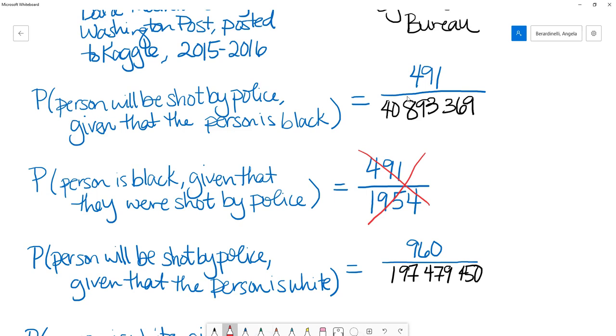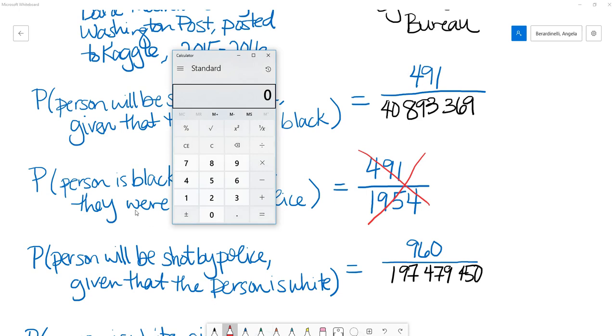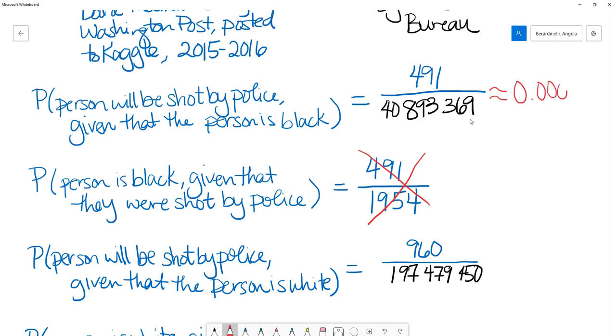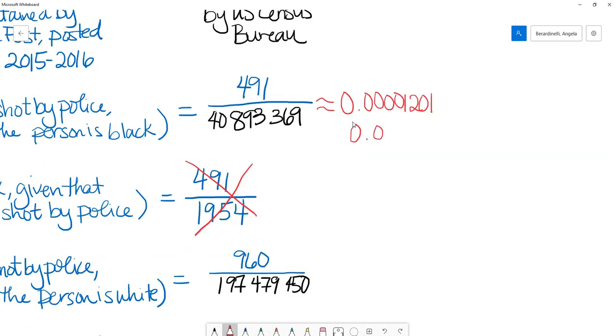What we really wanted to know was the probability of a black person being shot by police. So we needed to take that out of the total number of black people in the United States, which we got from the Census Bureau. So I'm ready to compute this probability, 491 divided by 40,893,369. And so we see this probability is about 0.00001201, approximately 0.0012%.